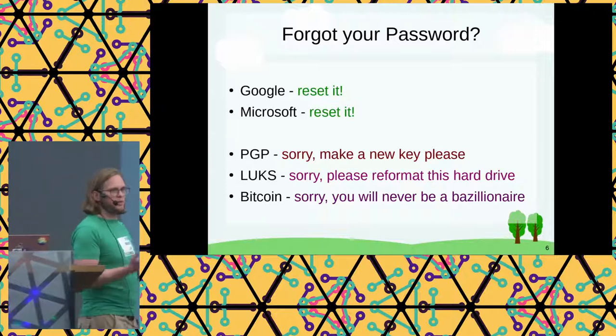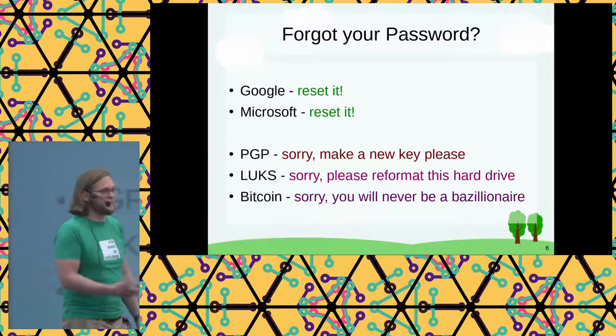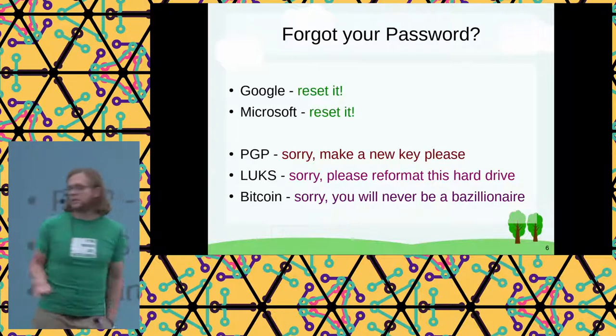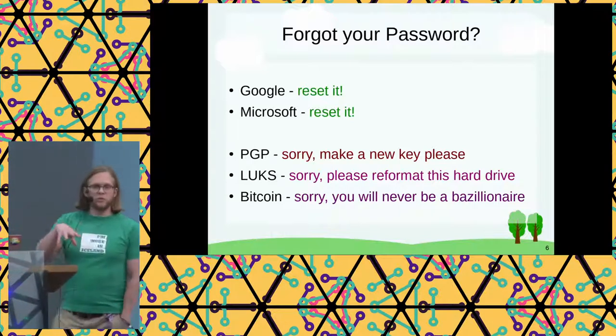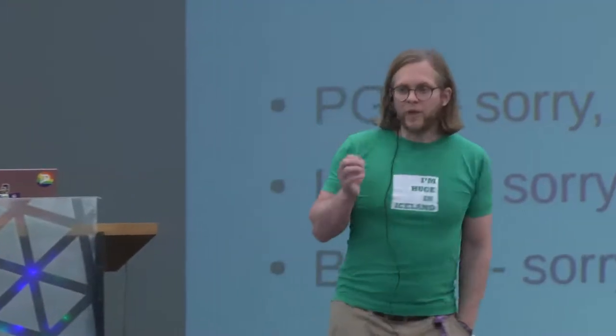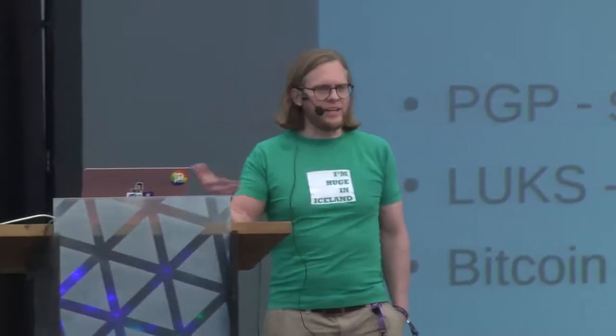There are failure modes they've fixed that we don't have solutions for. Google, Microsoft, all these big guys — even little guys. WordPress has a really nice password reset flow built into it. Every single web app does. But when you enter the world of encryption, where important information is encrypted, we don't have that. If you forget your passphrase to your PGP key, you create a new key. And you probably don't know how to publish that new key in a way that other people will find it.